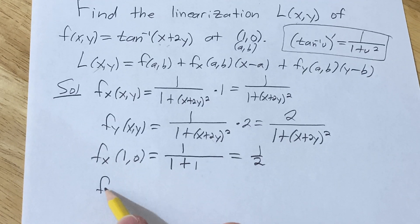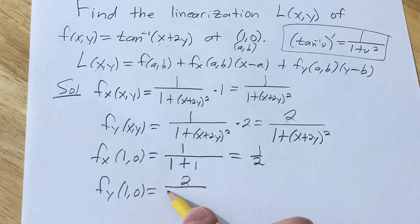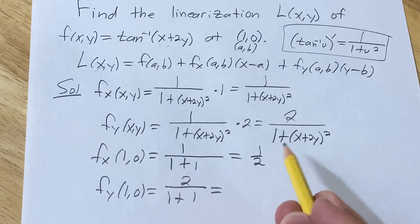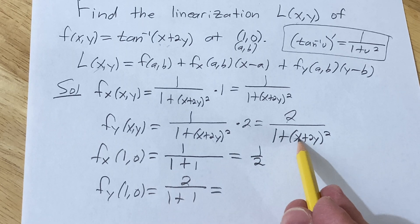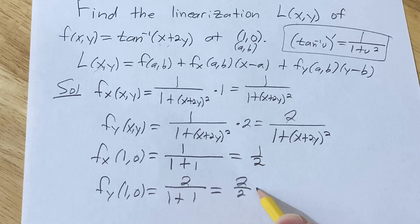And then f sub y at (1,0). Same thing with the 2 up top, though. So it's 1 plus 1. We're up to the same thing. So x is 1, y is 0, so you just get 1 squared, which is 1. So you get 2 over 2, so you get 1.